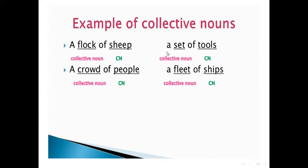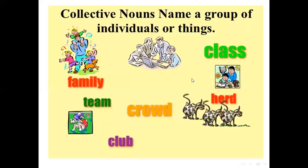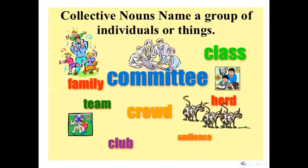So flock, set, crowd, fleet — all these words are called collective nouns. Collective nouns name a group of individuals or things, like family, team, crowd, club, curve, class. See also: family, committee, class, herd, crowd, team, club, and audience — these are all collective nouns.